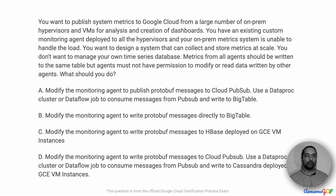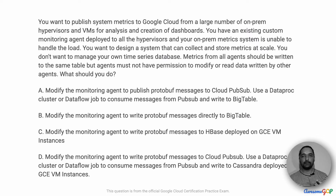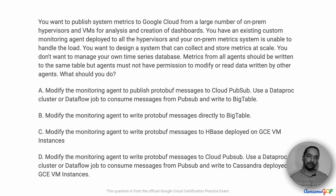In this project scenario, you want to publish system metrics to Google Cloud from a large number of on-prem hypervisors and VMs for analysis and creation of dashboards. You have an existing custom monitoring agent deployed to all the hypervisors and your on-prem metric system is unable to handle the load. You want to design a system that can collect and store metrics at scale. You don't want to manage your own time series database. Metrics from all agents should be written to the same table but agents must not have permission to modify or read data written by other agents.